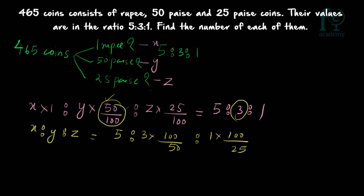To find x:y:z, take the inverse of the coefficients on the right-hand side. The inverse of 50/100 is 100/50, and the inverse of 25/100 is 100/25. So x:y:z = 5 : 3×(100/50) : 1×(100/25) = 5 : 6 : 4.